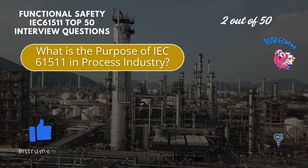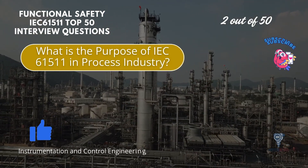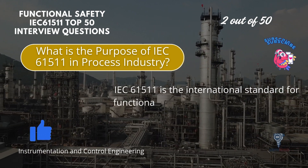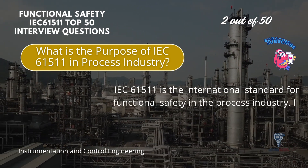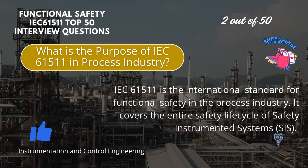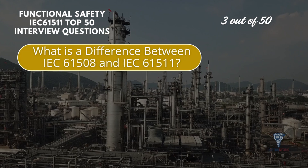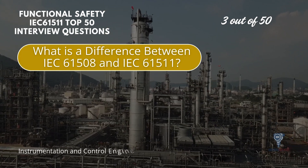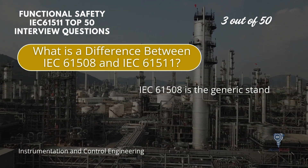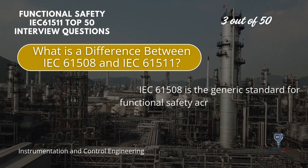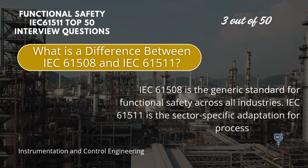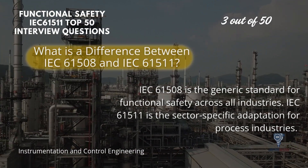What is the purpose of IEC 61511 in the process industry? IEC 61511 is the international standard for functional safety in the process industry. It covers the entire safety life cycle of safety instrumented systems. IEC 61508 is the generic standard for functional safety across all industries, while IEC 61511 is the sector-specific adaptation for process industries.